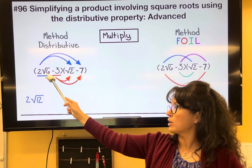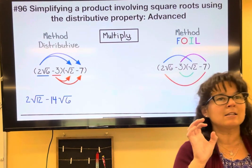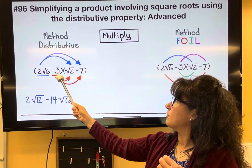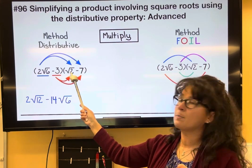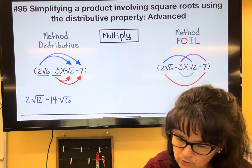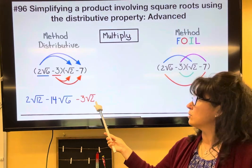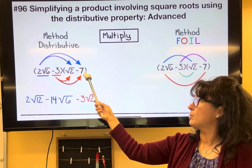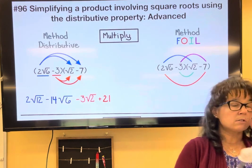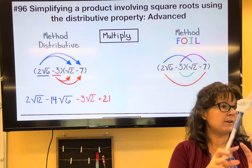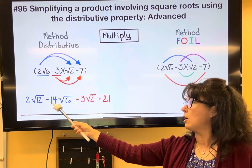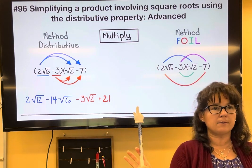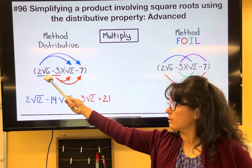Then we distribute the negative three. Negative three times the square root of two: negative times positive is negative, and three multiplied by root two is 3 root two. Finally, negative three times negative seven: negative times negative is positive, and three times seven is 21. So we get 2 root 12 minus 14 root six minus 3 root two plus 21. None of those are like terms, so it's done.